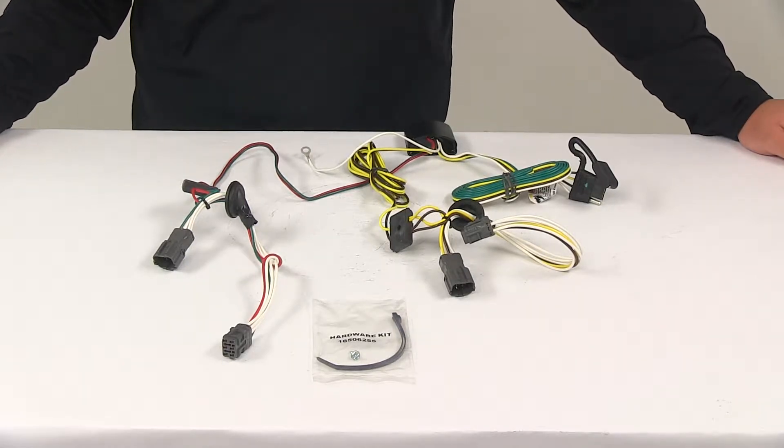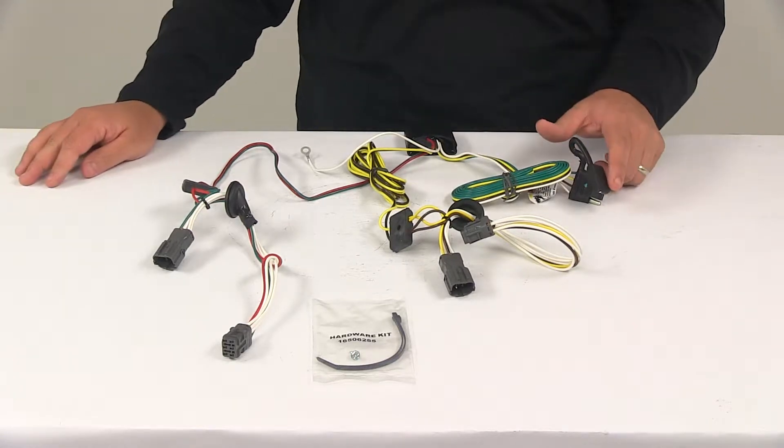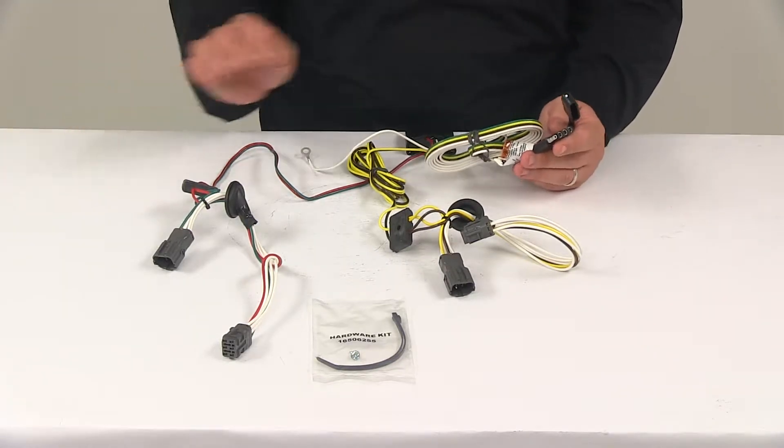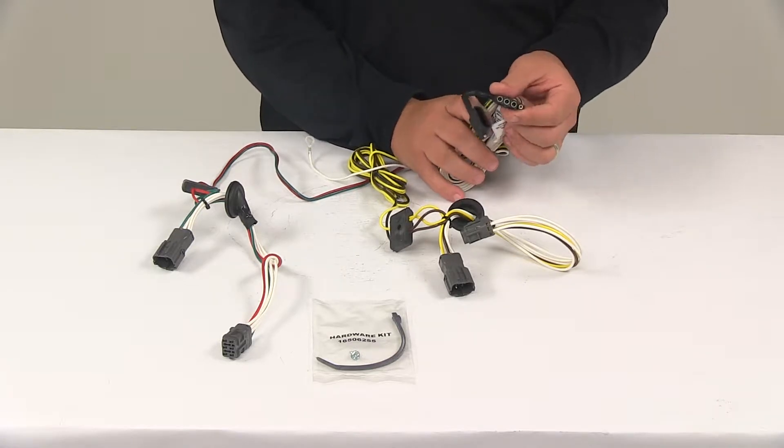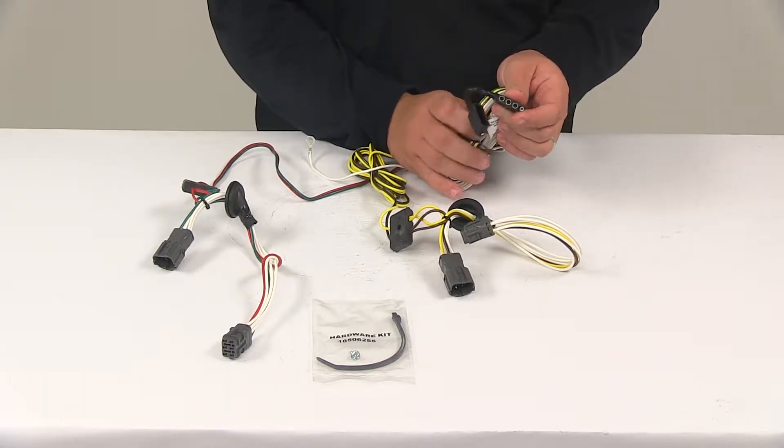Today we're going to be taking a look at the T1 vehicle wiring harness with a four-pole flat trailer connector. This product fits a 2005 to 2009 Hyundai Tucson. It's going to provide a four-way flat connector at the back of your vehicle to power your trailer's signal lights.